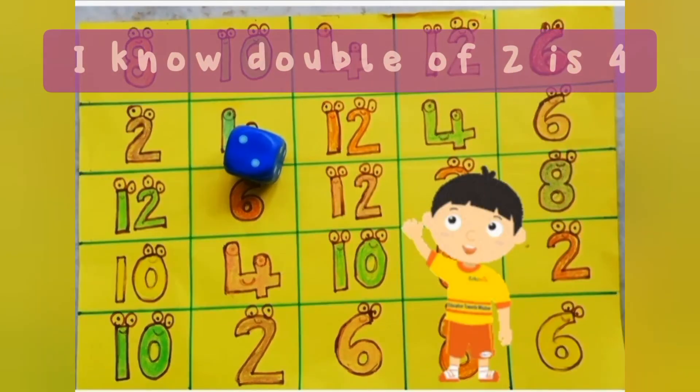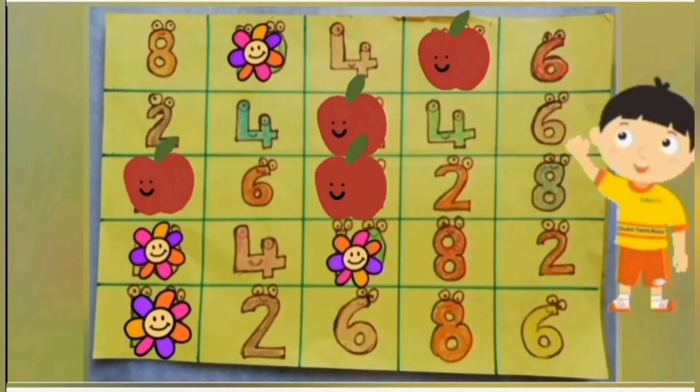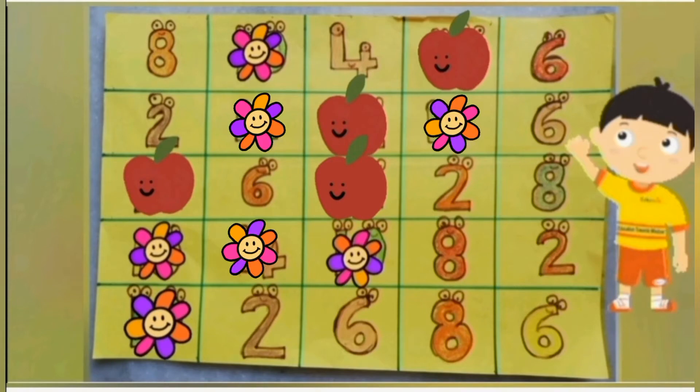It's two. I know double of two is four. As the first row is out already, we shall mark all the fours in the other rows.